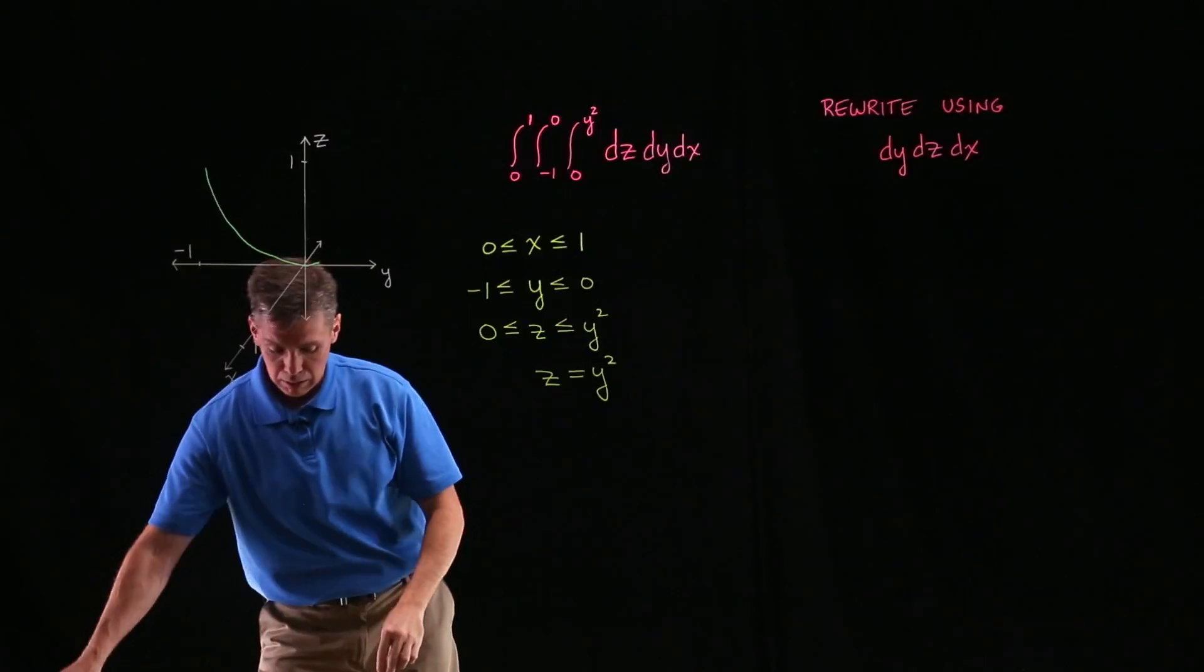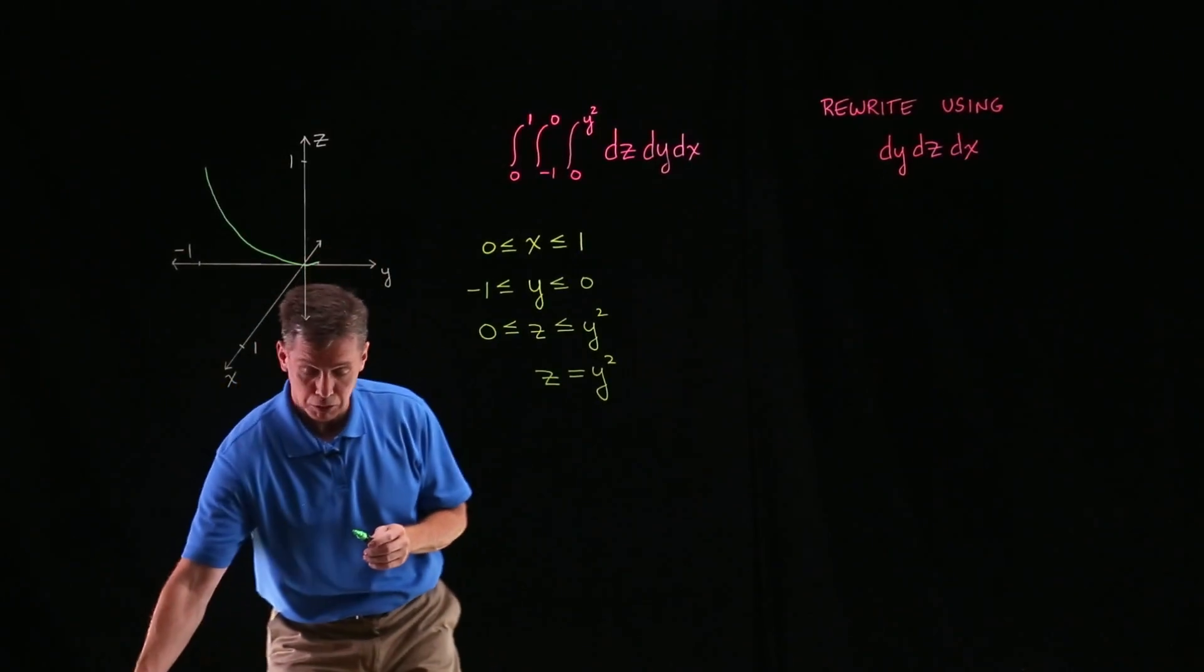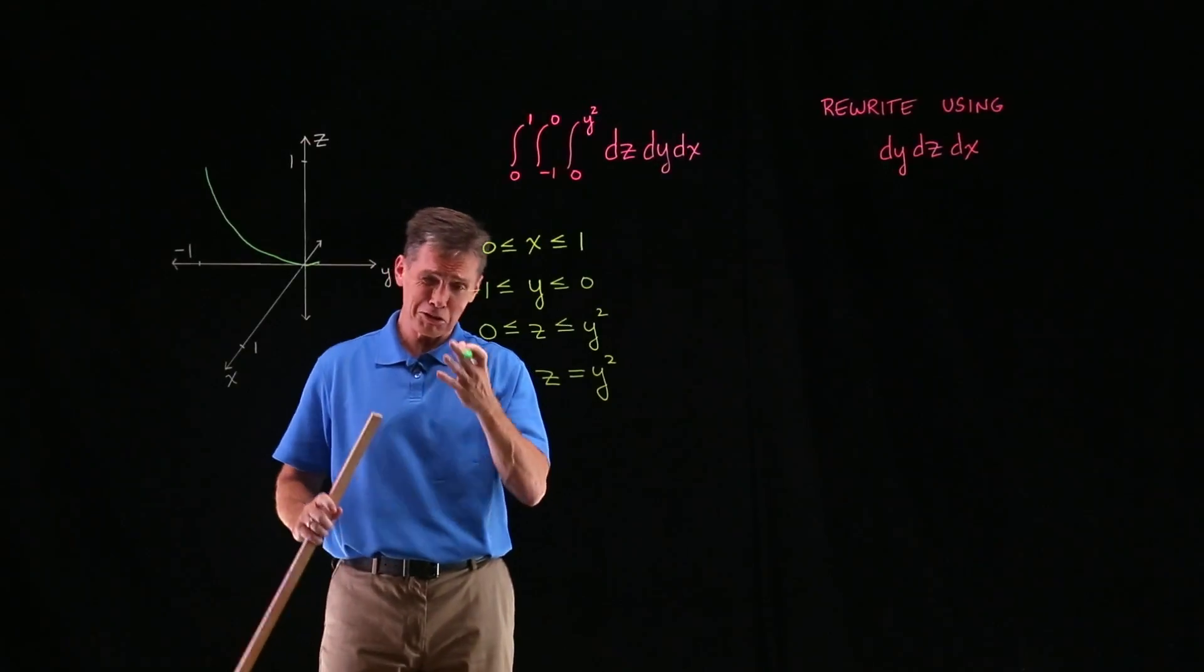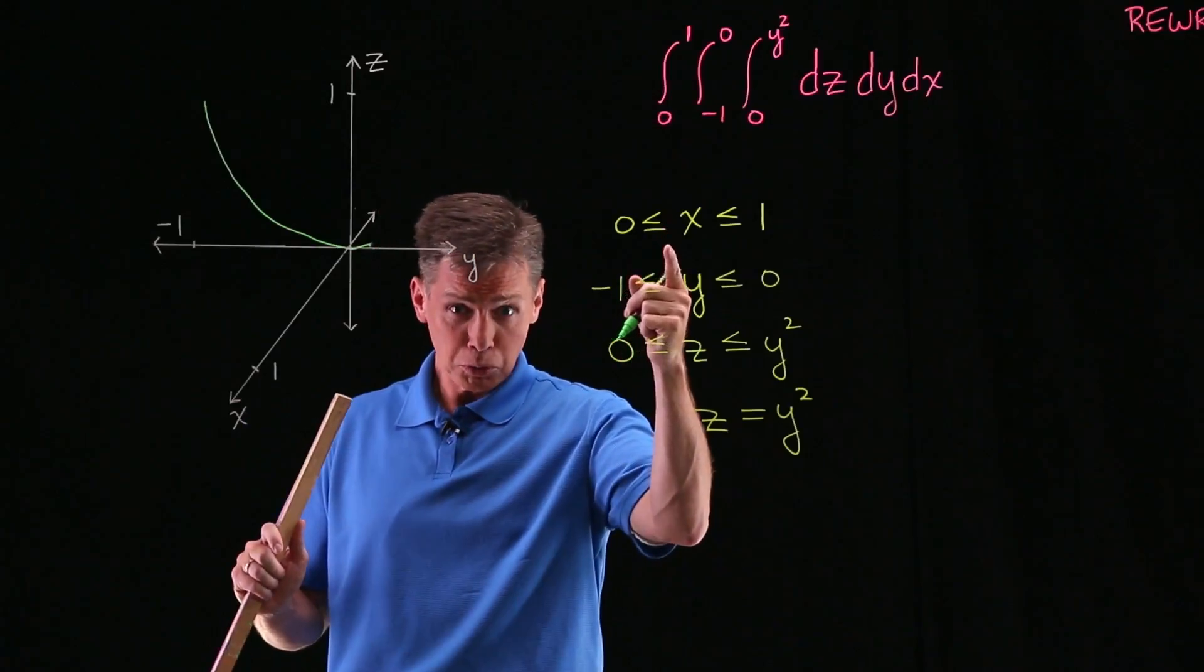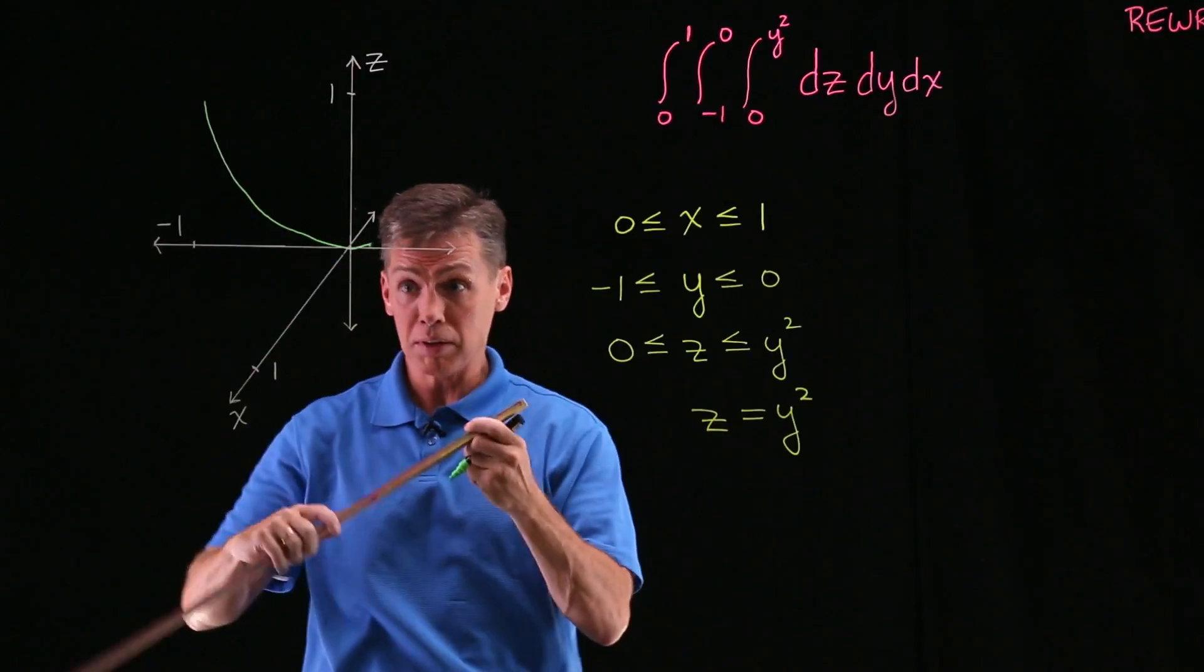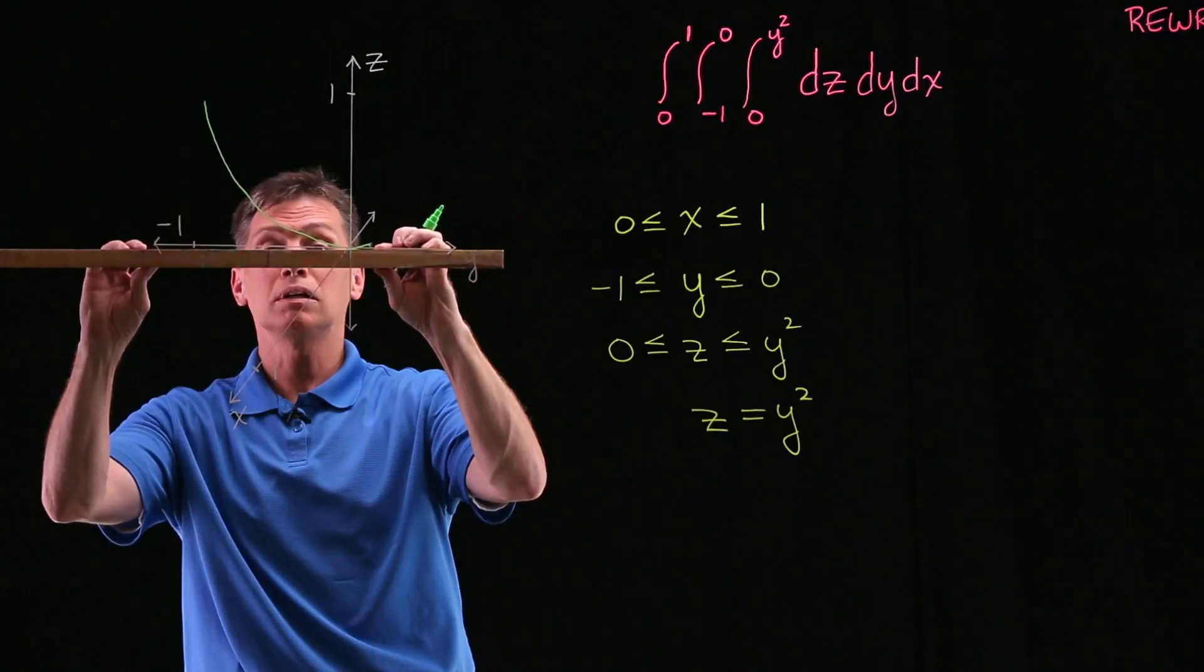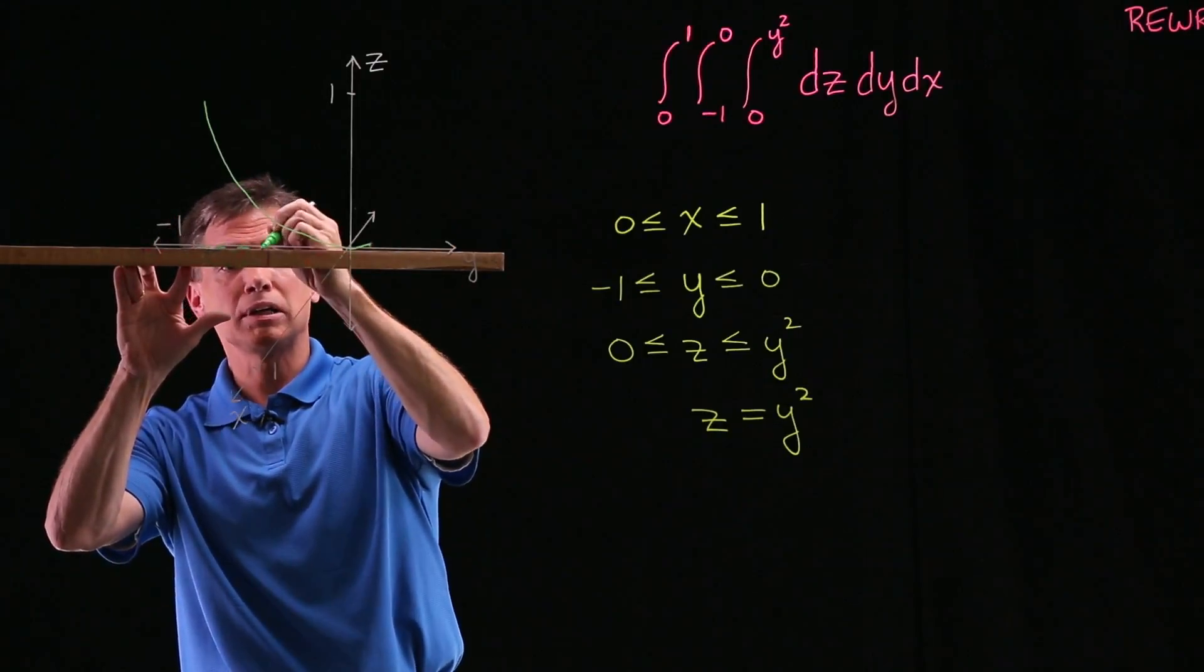Now let's start putting together the other parts of our solid, looking at these inequalities. I'll even grab a straight edge here to try to be kind of neat. x goes from 0 to 1. On the x-axis, no deeper into the board than right here. And I'll draw that. I'm going to draw it as a dashed line.